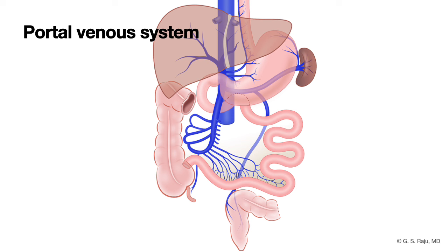In contrast to that, the portal venous system starts as capillaries, and they join to become venules, veins, and the portal vein. The portal vein enters the liver, then divides and becomes venules and capillaries again. So the portal venous system is characterized by a venous system that starts as capillaries and ends as capillaries, and it does not drain into the heart directly.